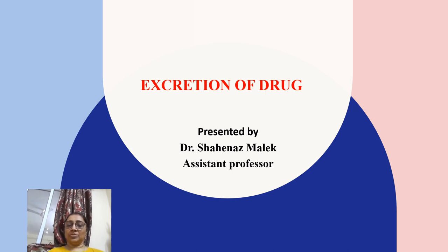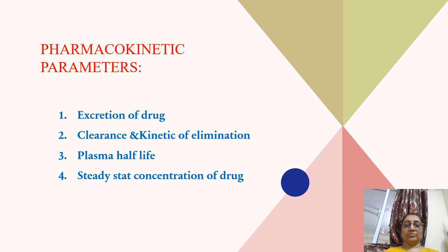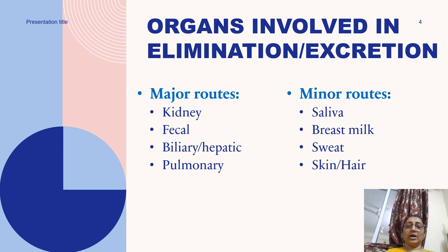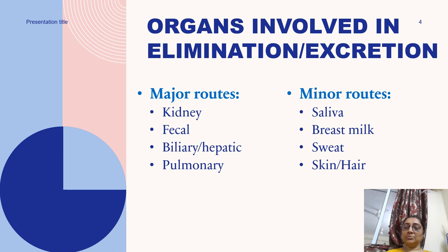Welcome to Pharmacomania. Today we are going to discuss excretion of drugs. There are four agendas: excretion of drug, clearance and kinetics of elimination, plasma half-life, and steady-state concentration of the drug. The organs involved in elimination or excretion of the drug include major routes: kidney, fecal route, biliary or hepatic route, and pulmonary route.